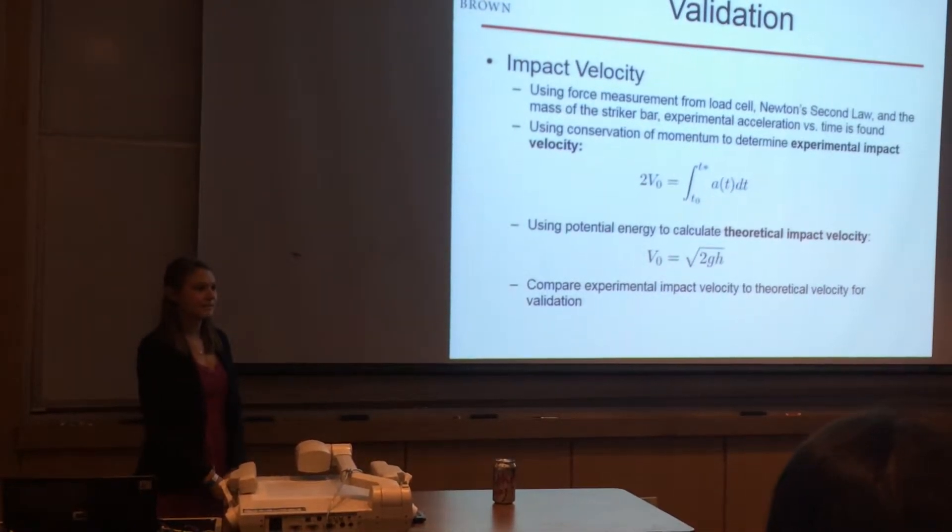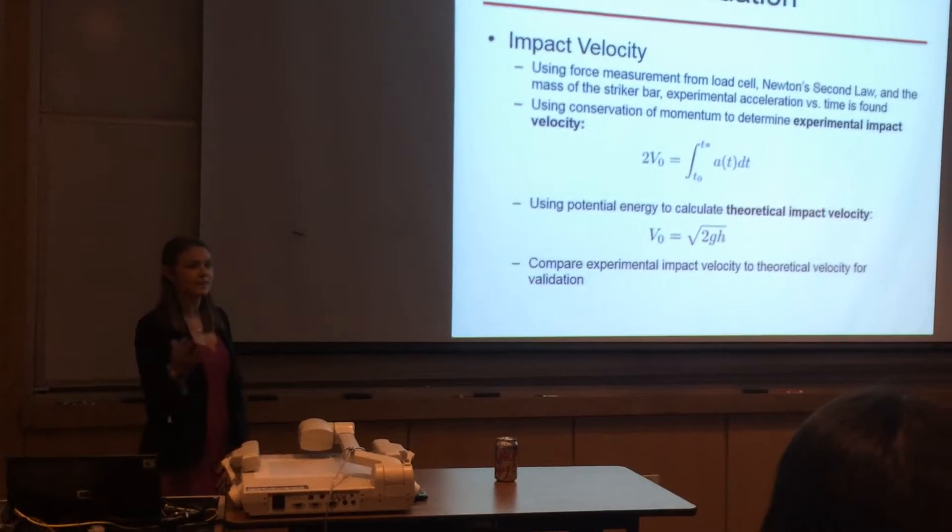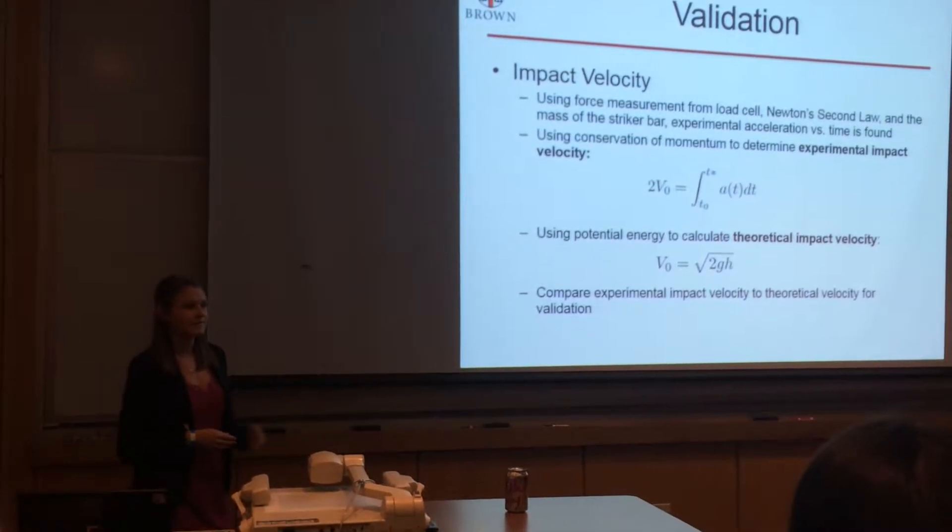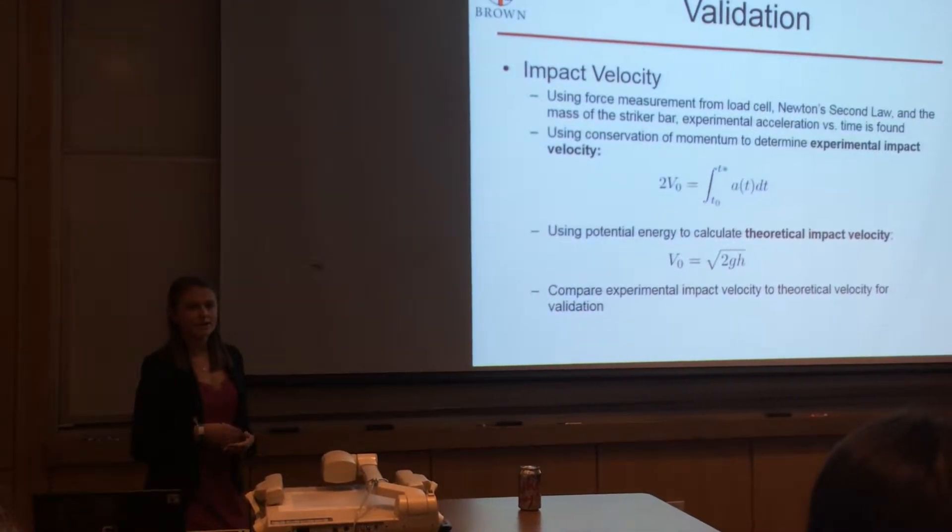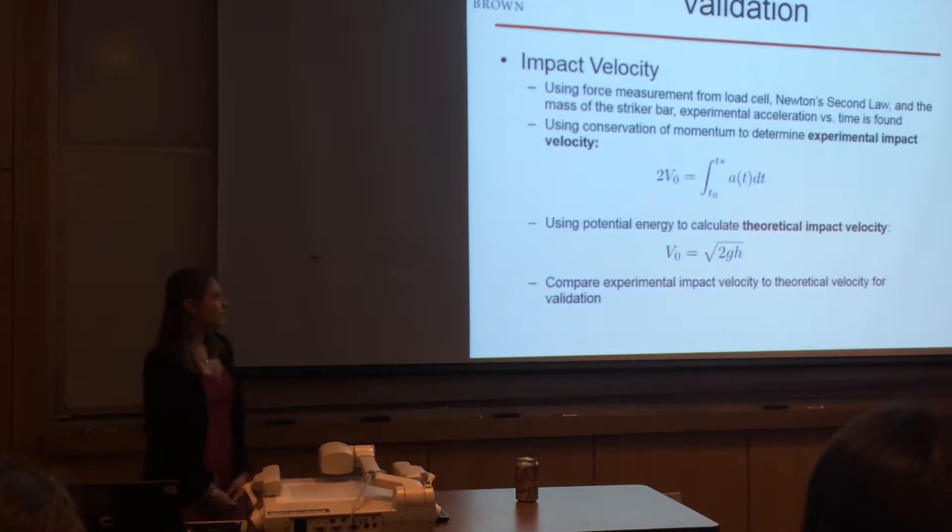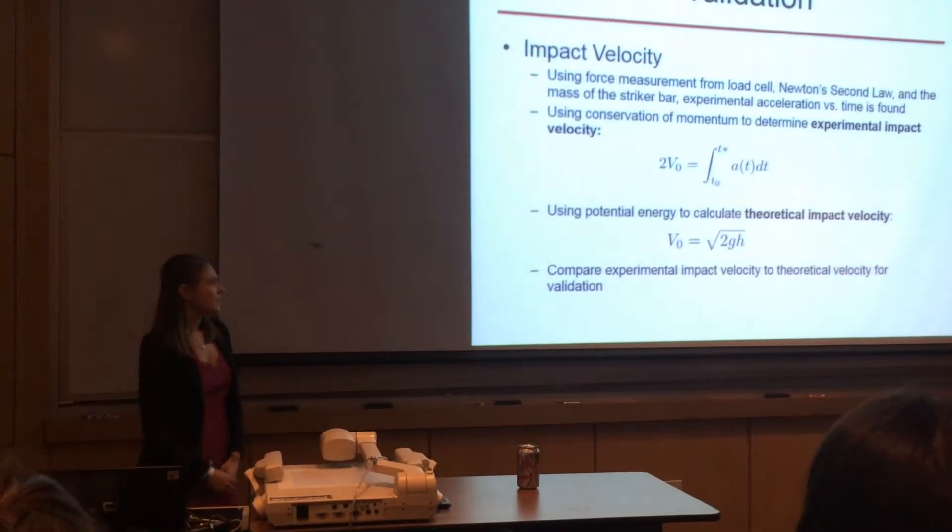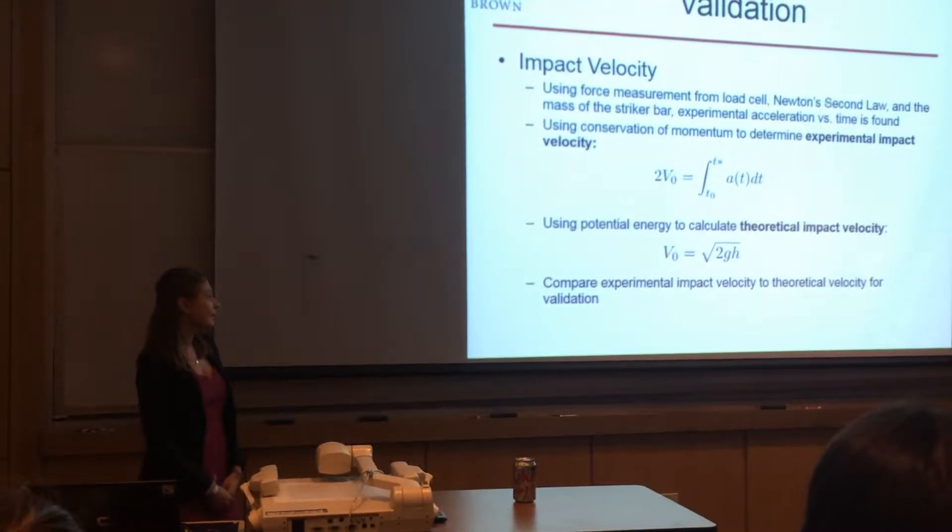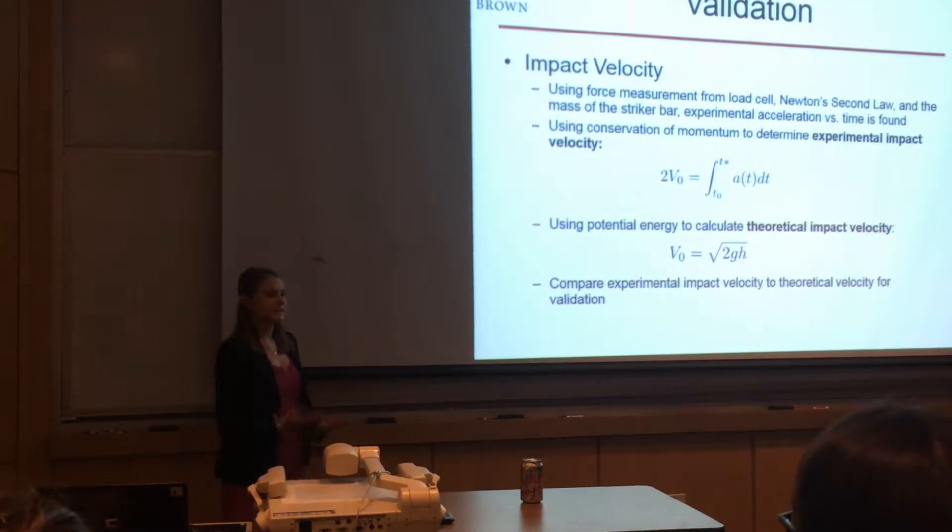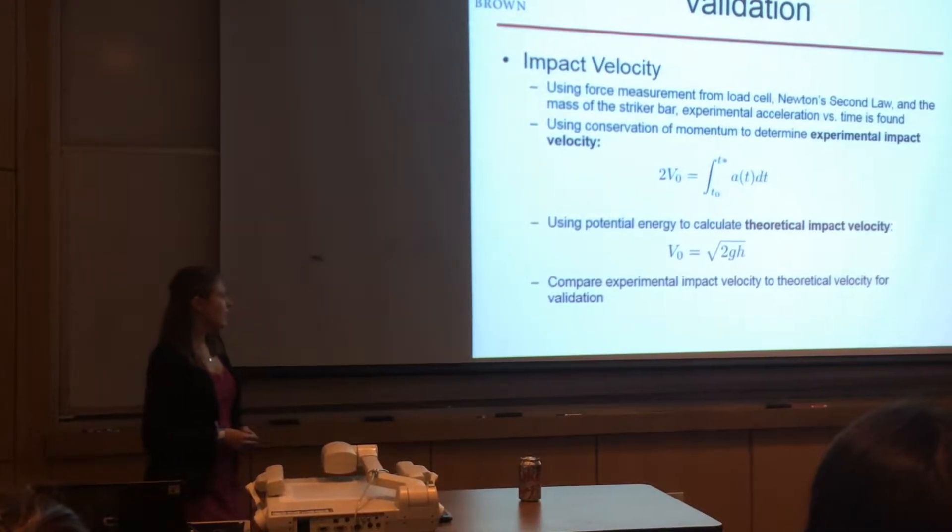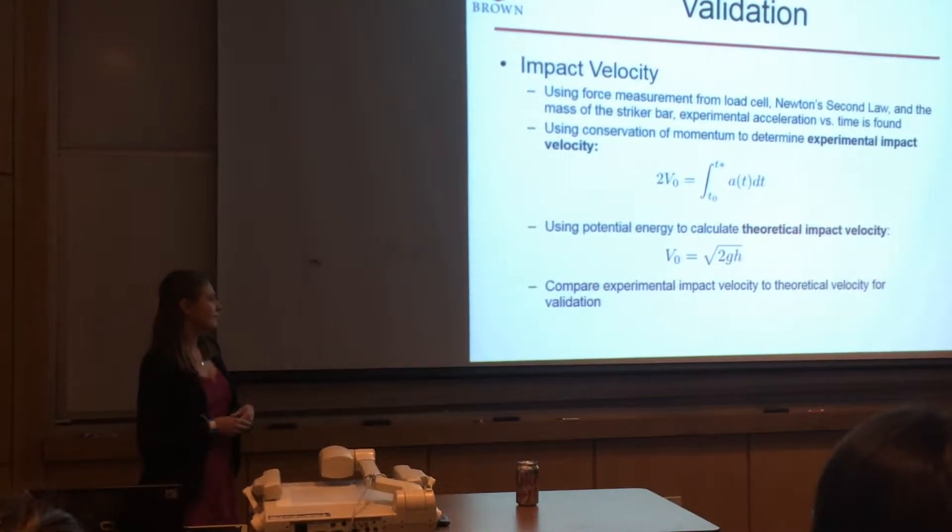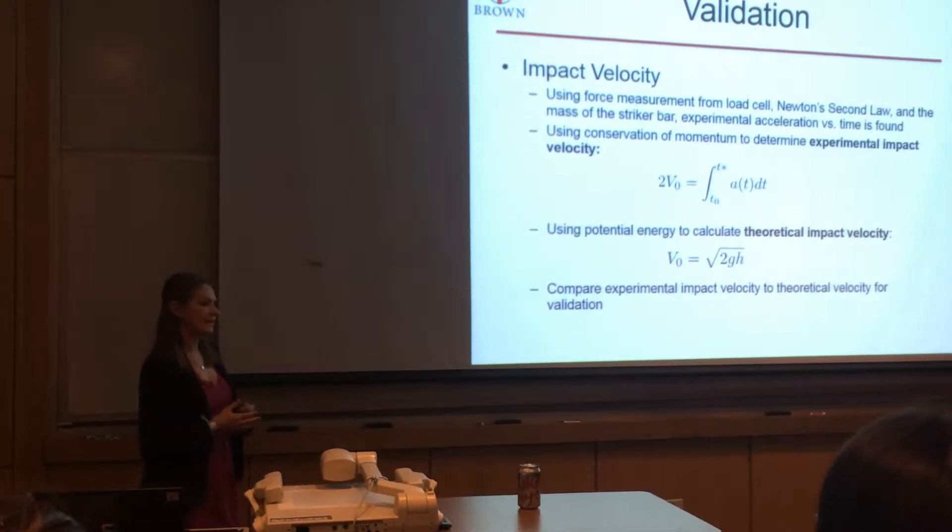Next I wanted to validate the system by comparing the impact velocity the theoretical and experimental impact velocities. As mentioned the load cell gave me force versus time data and using Newton's second law and the mass of the striker bar it was easy to convert this data to acceleration versus time. Then using the conservation of momentum I got this first equation here which allows me to calculate the experimental impact velocity by integrating the curve from the beginning of the impact to the end of the impact. The potential energy equation was used to give me the theoretical impact velocity equation as shown. V equals square root 2gh. It's just dependent upon the drop height.